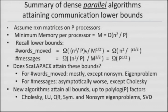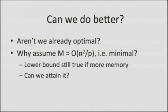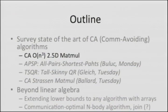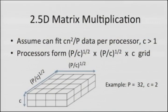We can do better by using more memory than the minimum. The lower bounds still hold even when memory is larger. So I'll talk about our two-and-a-half-dimensional matrix multiply algorithm. Assume I can fit C copies of the data, where C is one, two, three, or whatever. I take my P processors and form a 2.5D grid: the classical algorithm uses a 2D root-P by root-P grid; I form a 3D grid of C layers, each of size P/C by square root. The data starts unreplicated at the top layer.